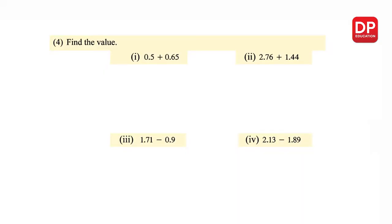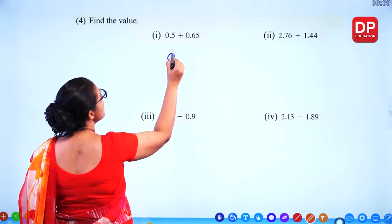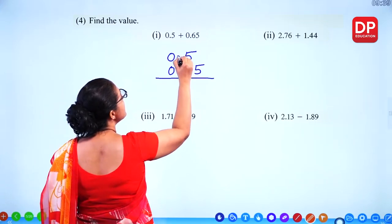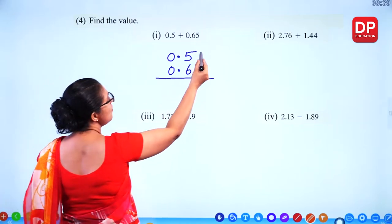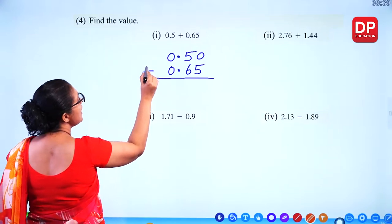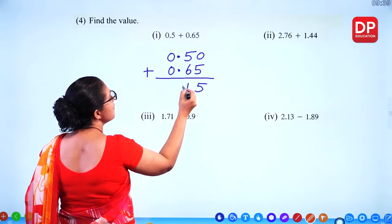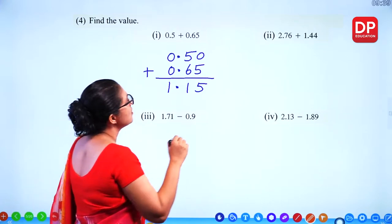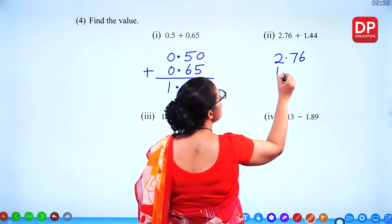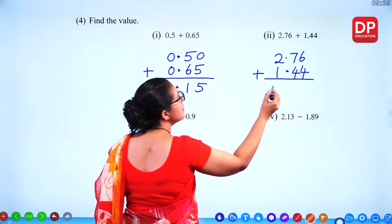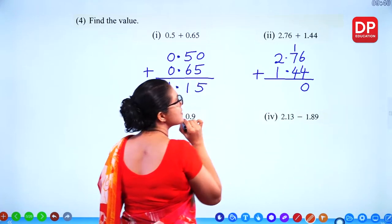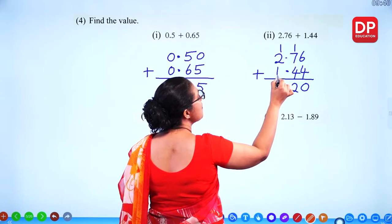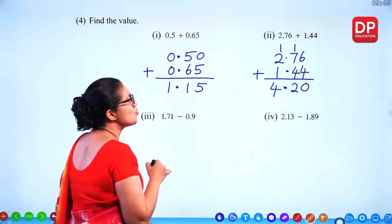Find the value — all these are decimals, so we'll add them in a column with the decimal points aligned. For the first pair, 6 plus 5 = 11, carry 1. Keep the decimal point. For 2.76 plus 1.44: 6 plus 4 = 10, carry 1; 7 plus 4 plus 1 = 12, carry 1; 2 plus 1 plus 1 = 4. The answer is 4.20, or simply 4.2.